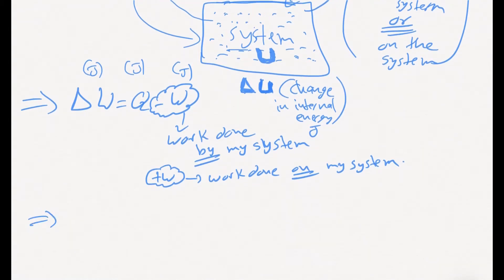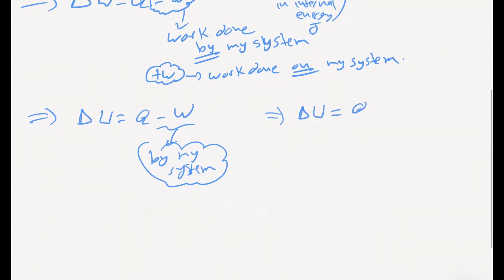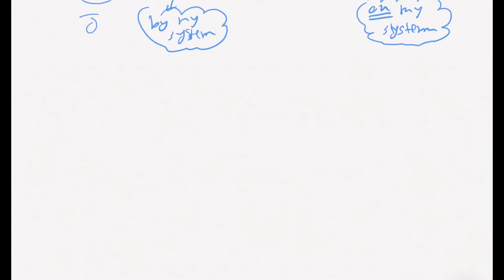Your formula has two variations: either delta U equals Q minus W, where minus W represents work done by your system; or delta U equals Q plus W, where plus W means work done on your system. The internal energy in joules is directly related to the heat transferred to or from the system, along with the work done by or on the system. This is the mathematical representation of the first law of thermodynamics.